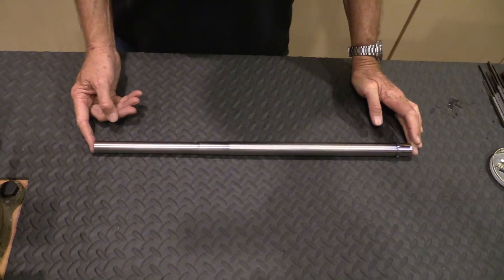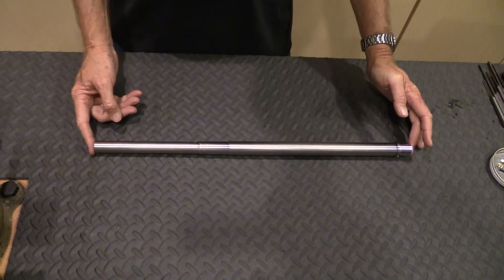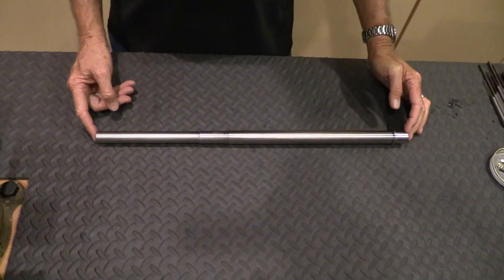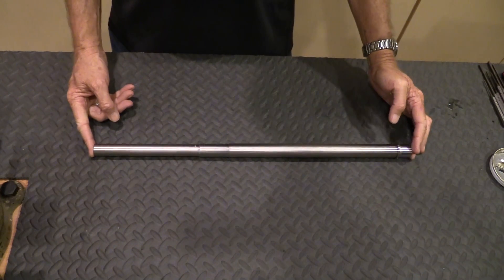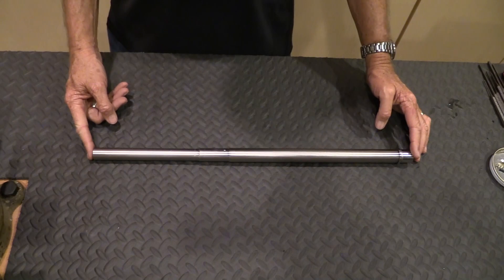I think that's about it. So again, it's chambered in .223/.556. It really is a nice barrel from White Oak Armament, and look forward to getting this threaded and get it installed on my rifle. Thanks for watching.